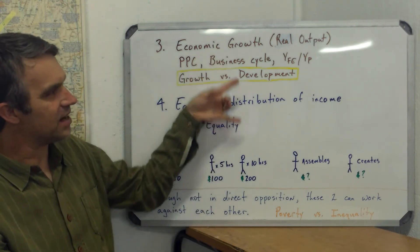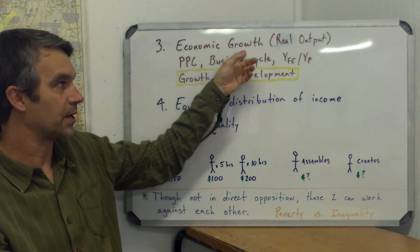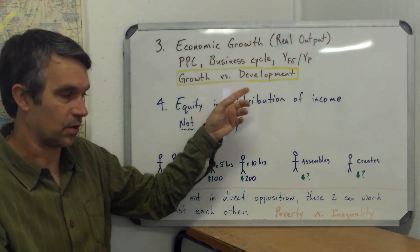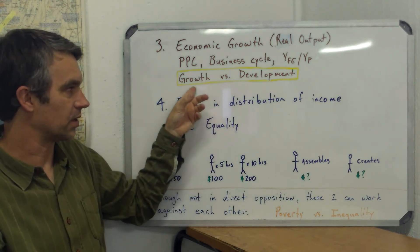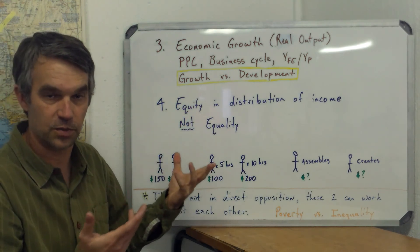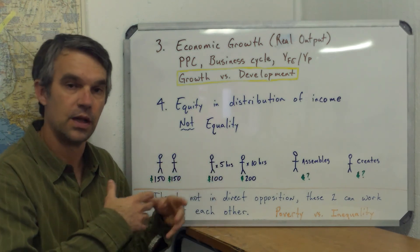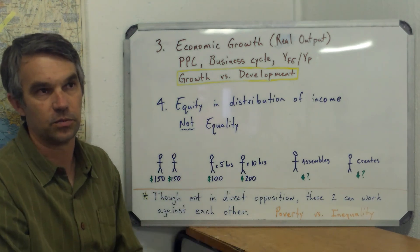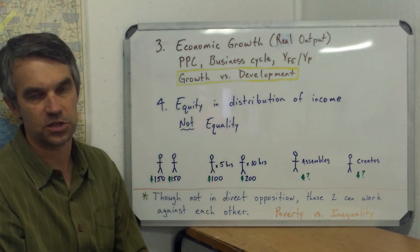These two objectives — economic growth and equity — can be in opposition. Especially in LDCs, when we do see a lot of economic growth, if it doesn't translate into economic development, oftentimes we see a growth in inequity in the distribution of income. In an LDC, it tends to be a common problem that economic growth will drive inequity. Here in South Africa, we are amongst the highest countries in the world for inequity in the distribution of income.